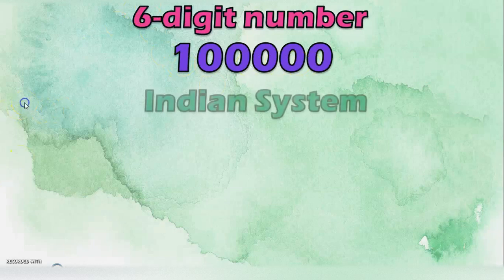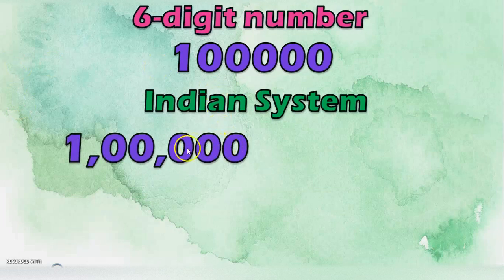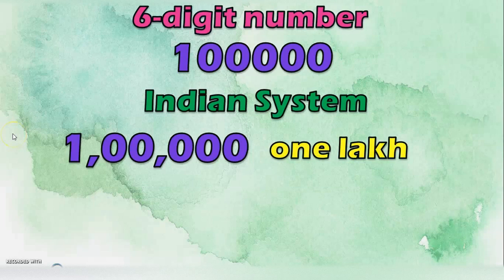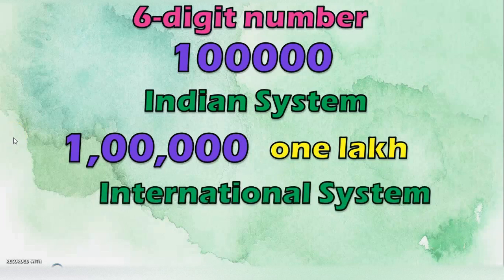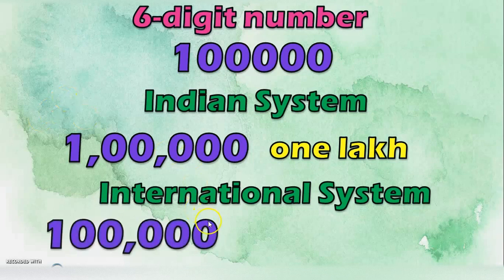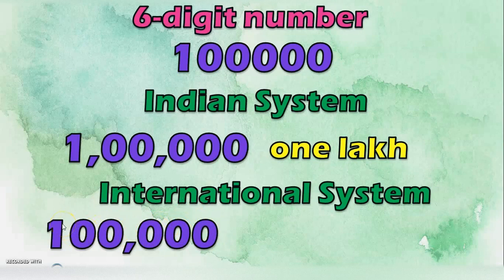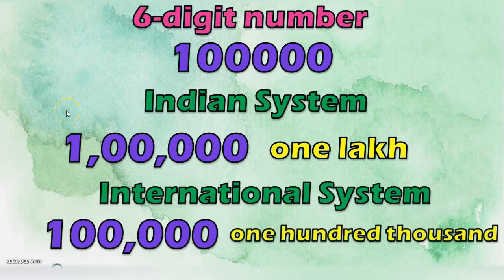Consider this 6 digit number. In the Indian system, you place a comma after the ones, tens, and hundreds place, and then after the thousand and ten thousand place — this is the lakh's place value because it is a 6 digit number. The number name is one lakh. In the International system, ones, tens, and hundreds get a comma, but then thousands, ten thousand, and hundred thousand together form the thousands period — so you do not place a comma after two digits like in the Indian system. For every three numbers you place a comma, so the number name in the International system is one hundred thousand.